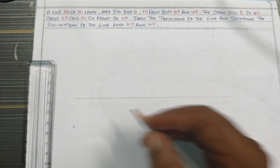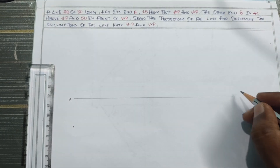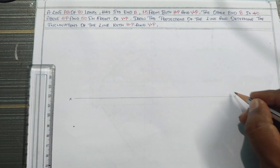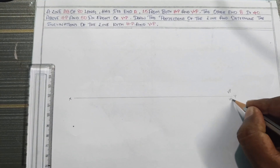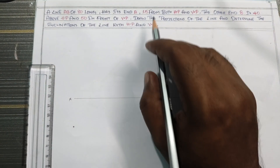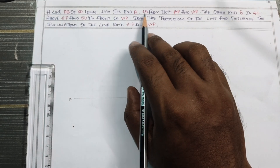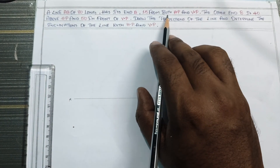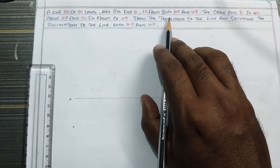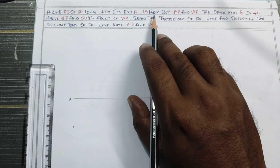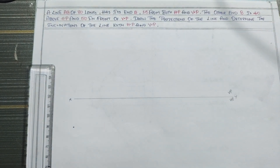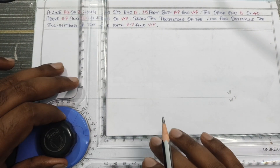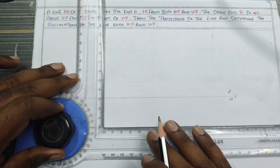Okay, so this is x, this is y, this is VP, this is HP. Here — clear — this is 15 from both HP and VP. That means 15 mm from HP and VP.